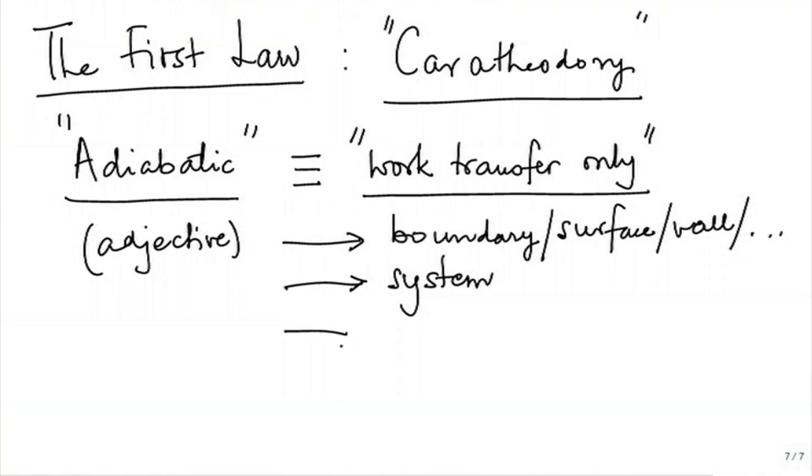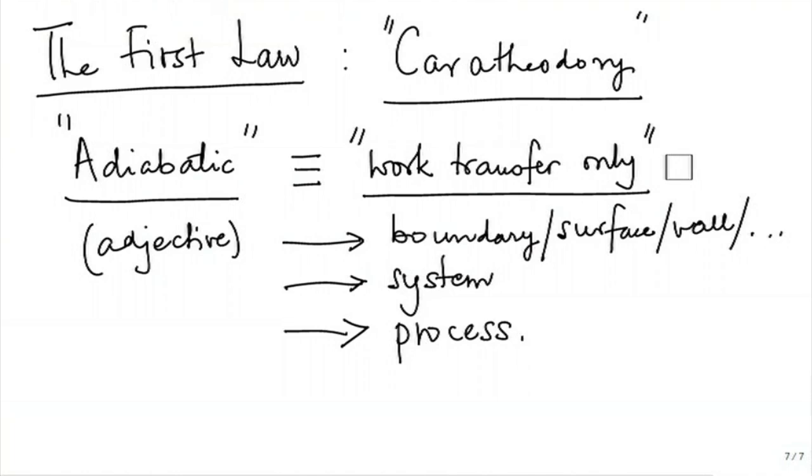Since an interaction almost invariably leads to a process, the word adiabatic can also be applied to a process. An adiabatic process is a process in which the only interaction which takes place is the work interaction. An adiabatic process will be executed by an adiabatic system bounded by adiabatic walls. So adiabatic finally means work transfer only.